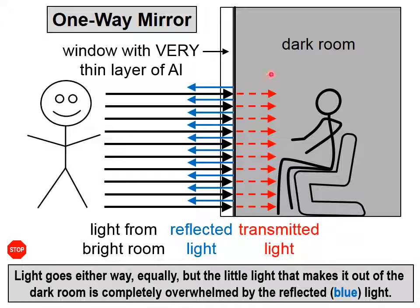Light does go both ways through this very thin layer of aluminum, but the little light that makes it out of the dark room is completely overwhelmed by the reflected, which I've colored blue, light.